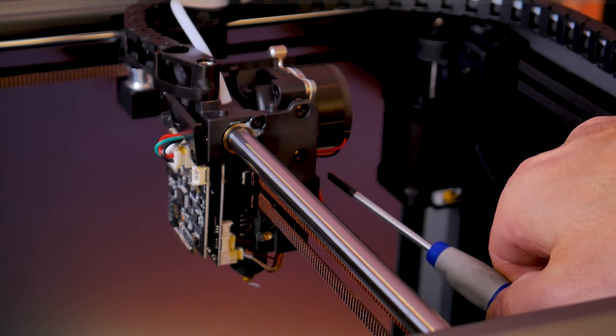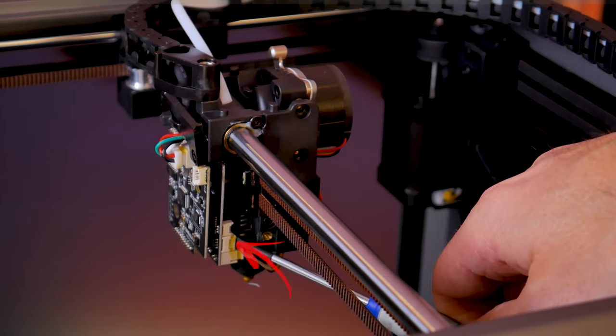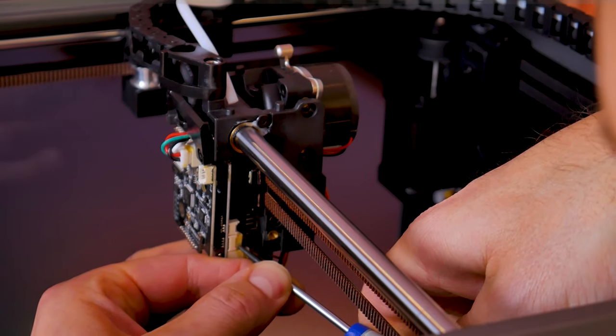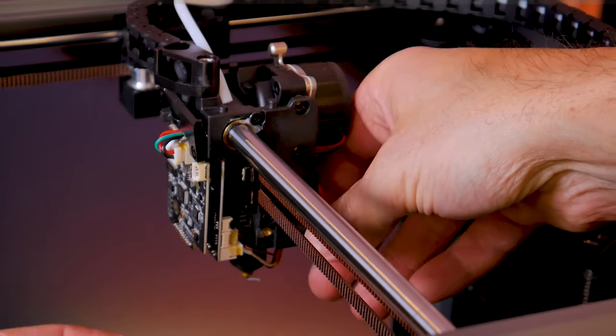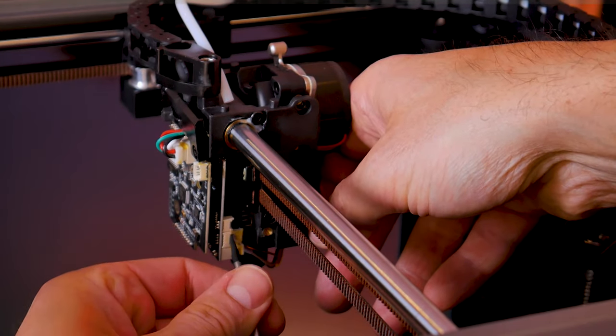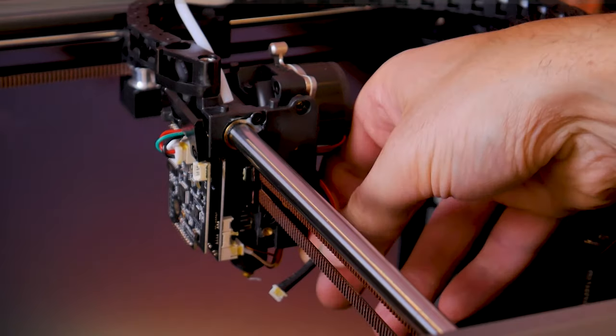This will reveal the four pin connector for the extruder stepper motor. If this is the first time you're doing this, the connector will likely be glued into place, so you'll have to slowly work on that connector to loosen it off and eventually it will come out. Just be careful not to break it because it is a very small connector.